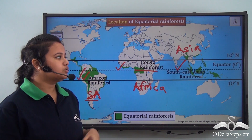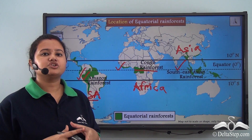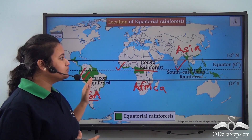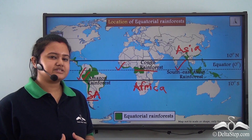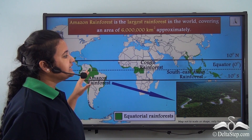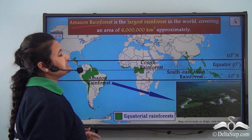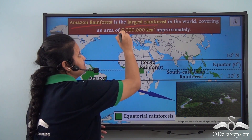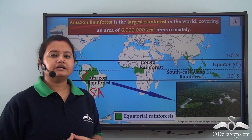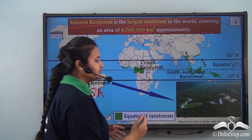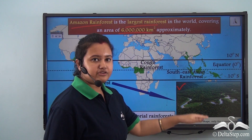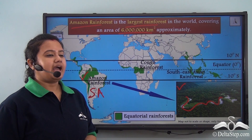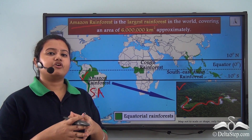The equatorial rainforest lies very close to the equator and is present in three major continents — South America, Africa, and Asia. Among these three rainforests, the Amazon rainforest is the largest rainforest in the world. It covers an approximate area of six million square kilometers. The Amazon rainforest is drained by the Amazon river. This meander in the picture represents the Amazon river, and this Amazon rainforest is the largest rainforest in the world.